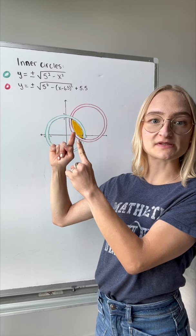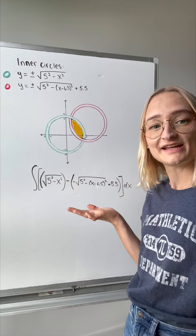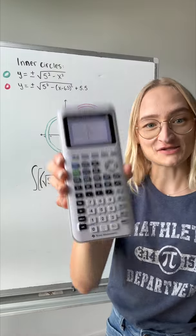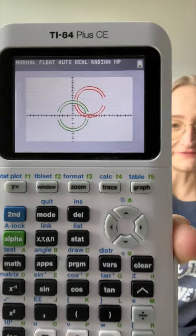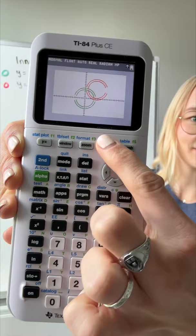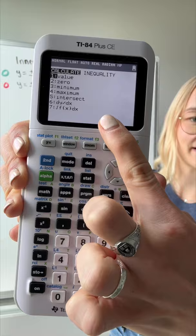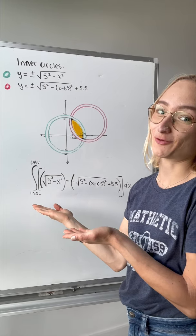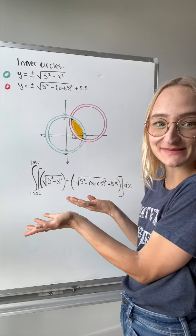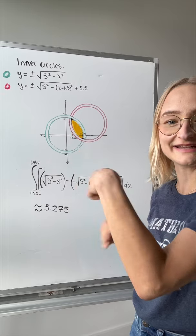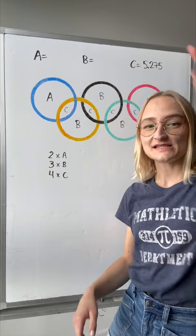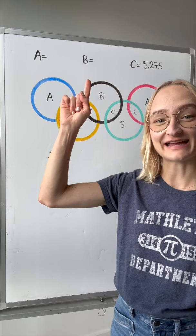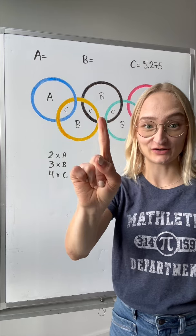We subtract this top circle minus this bottom circle. To find the intersection points, I used my TI-84 by going to Second → Calc → Intersect. The intersections are 1.566 and 4.944. Plugging this into our calculator, this yellow area is approximately 5.275. So we've found C.